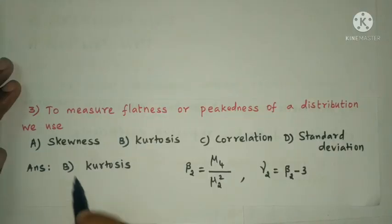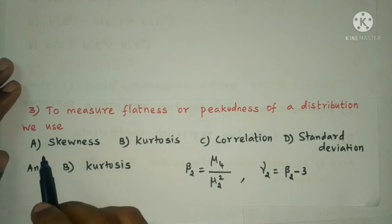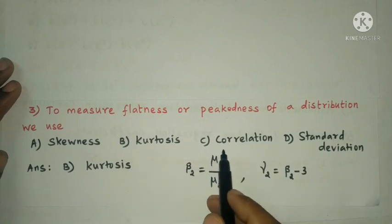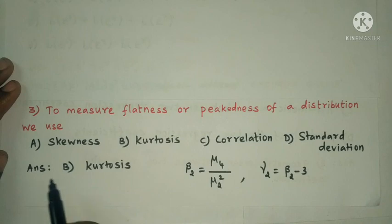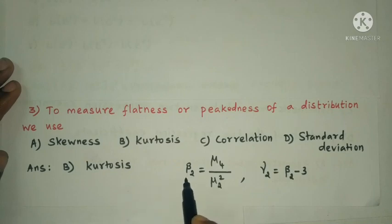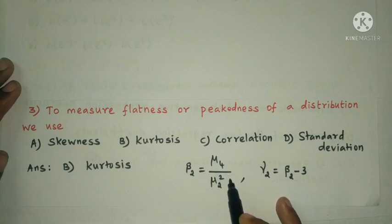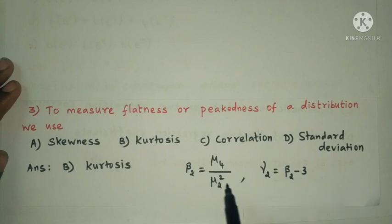For a distribution, which measure describes peakedness? Option A: skewness; option B: kurtosis; option C: correlation; option D: standard deviation. The answer is option B, kurtosis. The coefficient of kurtosis formula is: beta 2 equals mu 4 divided by mu 2 squared, and gamma 2 equals beta 2 minus 3. This is the coefficient of kurtosis formula.